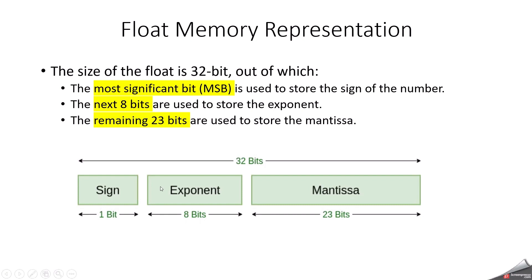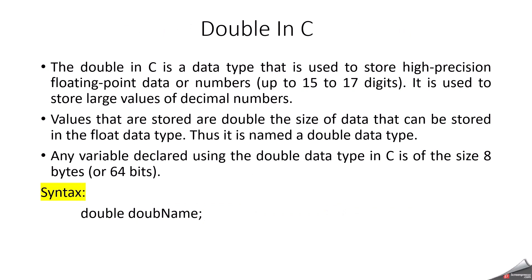First we can start with float. Float in C has a memory size of 4 bytes, which is equal to 32 bits, because one byte is equal to 8 bits. Float is a single precision 32-bit floating point type used to store decimal numbers. It can store decimal values with a precision of six to seven decimal places. The syntax requires using the float keyword to declare a variable.